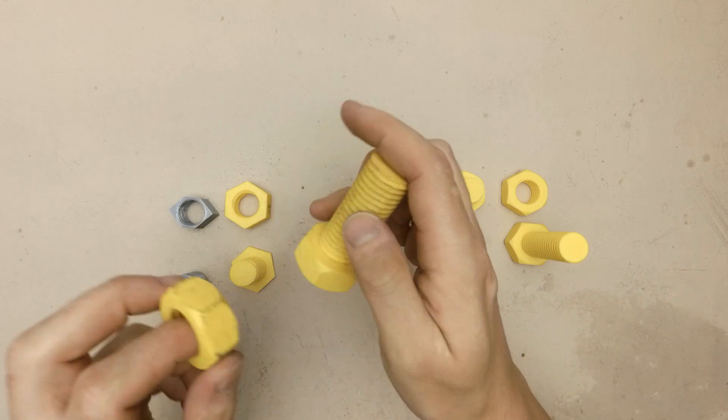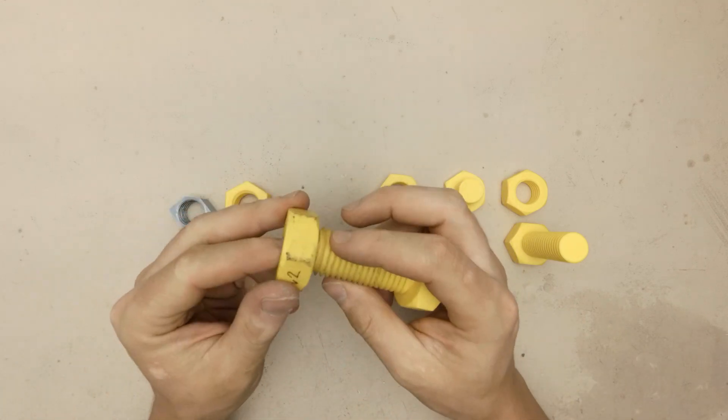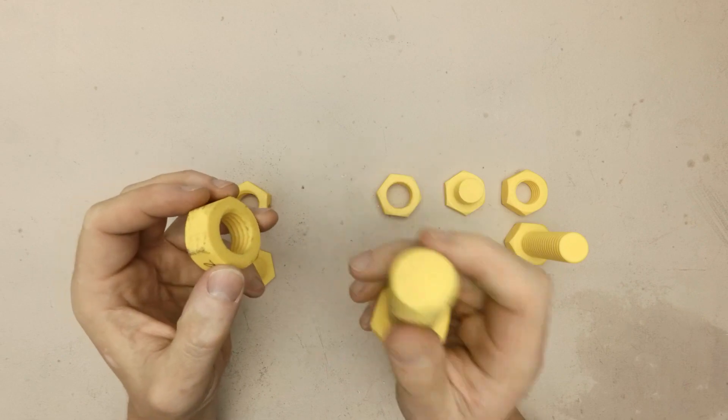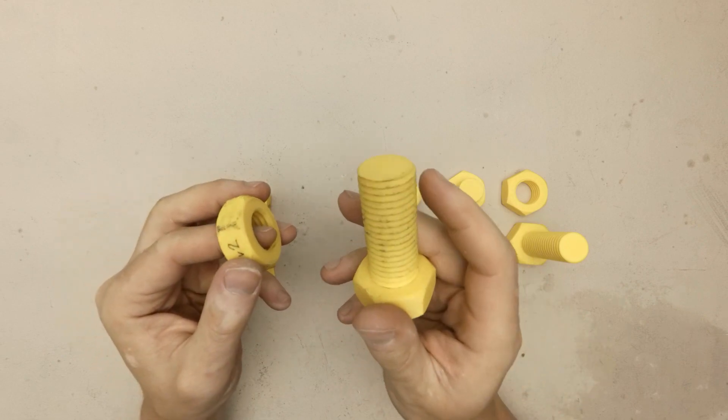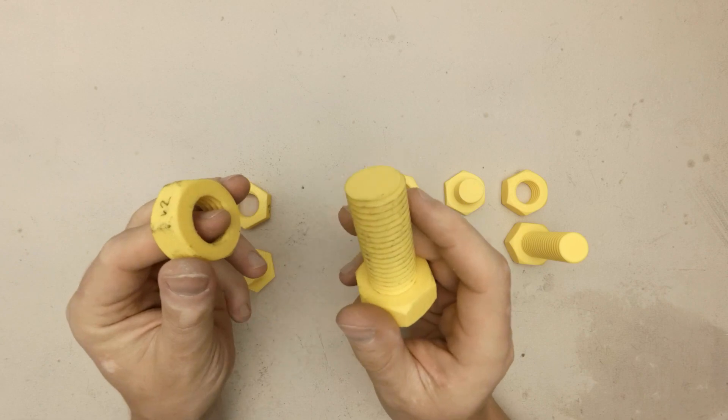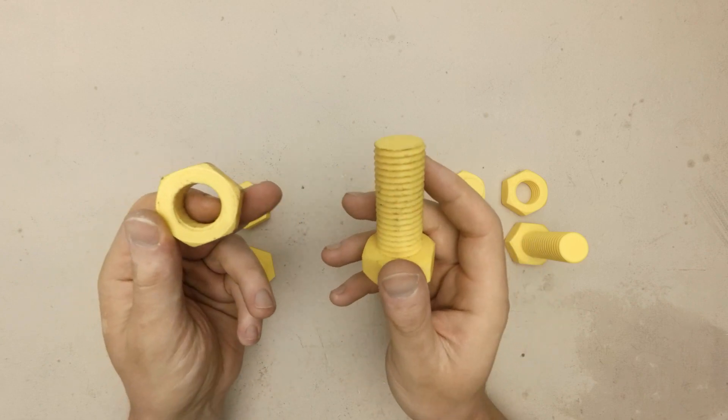The next iteration was nicer because I added rounded edges and it looks like a proper screw. This time I printed regular right handed threaded screw and nut just to check if everything is ok with my models and clearances.